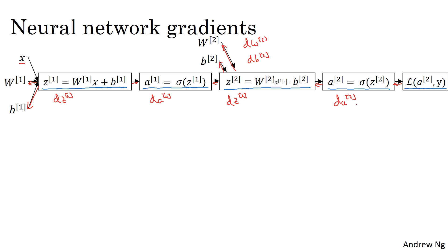I'm going to skip explicitly computing da2. If you want, you can actually compute da2 and then use that to compute dz2. But in practice, you could collapse both of these steps into one. So you end up that dz2 is equal to a2 minus y, same as before. I'm going to write dw2 and db2 down here below.